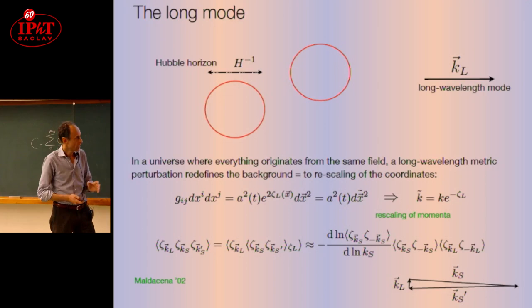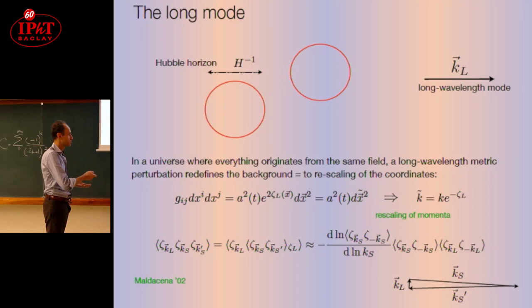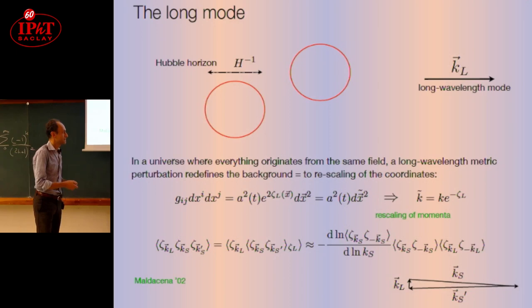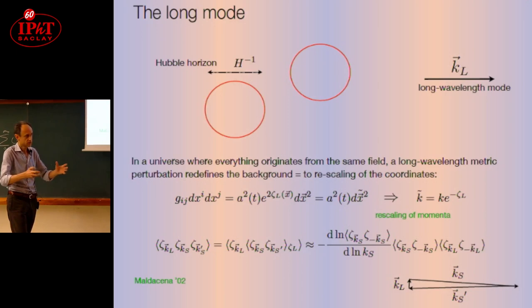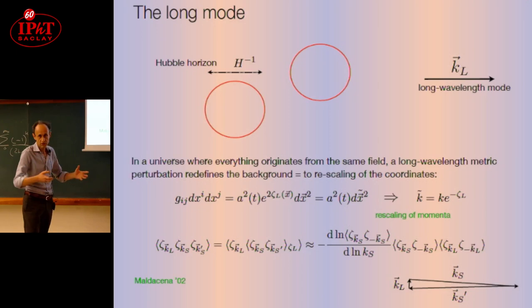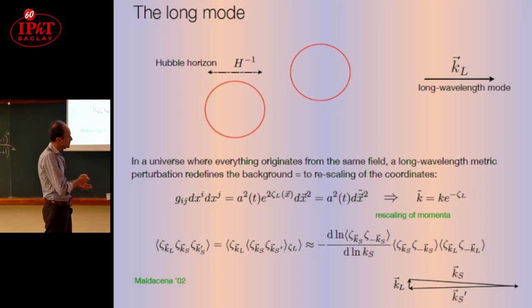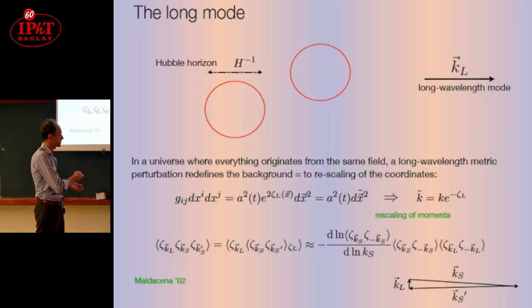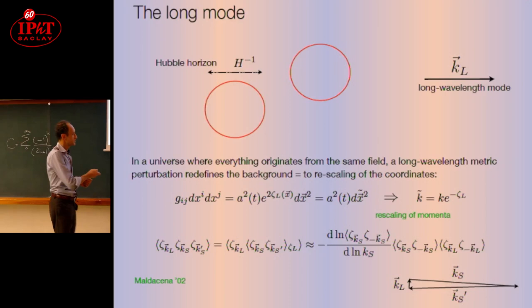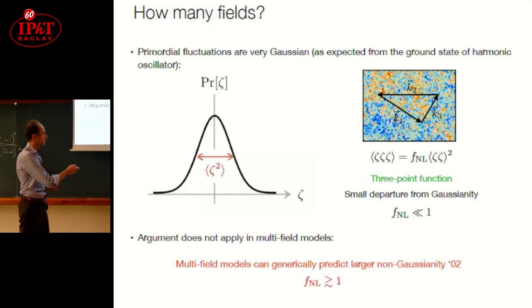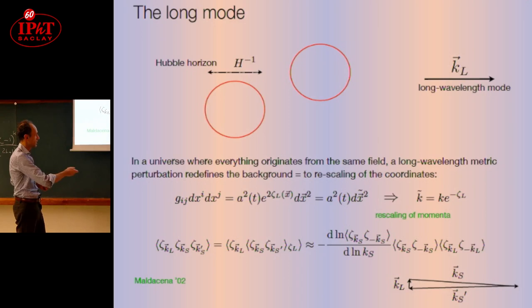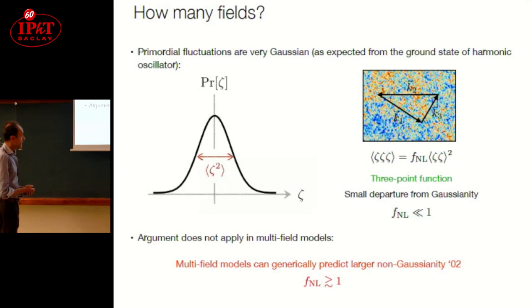These simple arguments can be used to draw a relation, which sometimes is called consistency relation, between the three-point function in the limit where one of the modes goes to zero, to the two-point function for the short mode times the two-point function for the long mode, times something related to the deviation from scale invariance of the spectrum. This should be zero for a perfectly scale invariant spectrum. What we observe in inflation is a spectrum of fluctuations which is not fully scale invariant. However, the deviations from scale invariance are very tiny, and this tells us that fNL is also tiny.